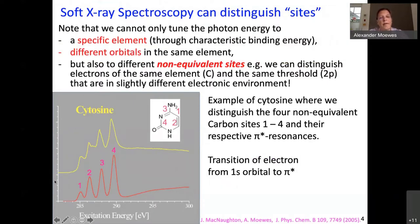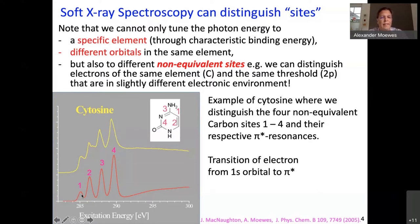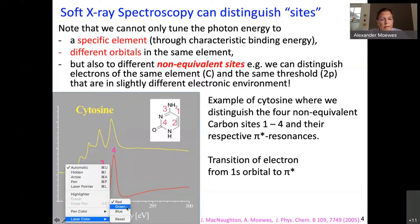What is shown here in the measurement window on the graph is that the sample cytosine — a building block of DNA, one of the four building blocks — shows absorption spectra going across the carbon 1s L-edge. In the little insert, you see the four non-equivalent carbon atoms labeled one, two, three, and four. When you look at the absorption spectrum, you see that the four non-equivalent sites each give rise to the corresponding peaks, corresponding to the pi-star resonances and pi-star transitions of the four non-equivalent sites.